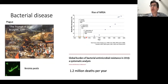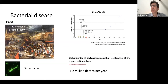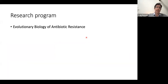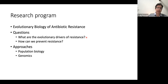Resistance has emerged as an important global health problem. The most recent estimates say that over a million people die as a result of resistant infections every year, and some have argued that by the mid-21st century resistant infections may become a leading cause of human death. Responding to resistance is a global scientific challenge. In my lab for the last 13 years we've focused on studying the evolutionary biology of antibiotic resistance — asking what are the evolutionary drivers of resistance, how can we prevent it, using approaches from population biology, genomics, and microbiology.